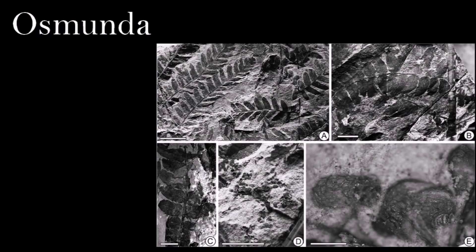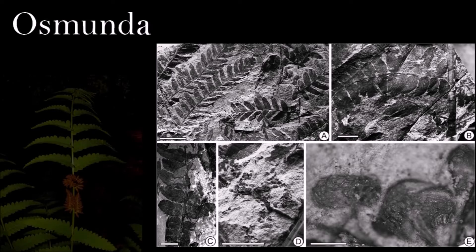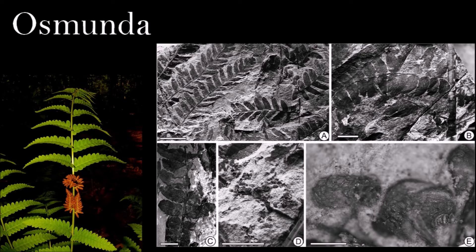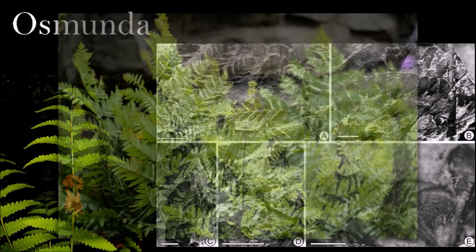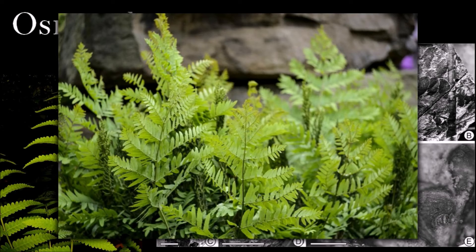The Osmundaceae appeared in the late Permian of both the northern and southern hemispheres. Evolution of the family was rapid during the late Paleozoic and early Mesozoic, giving it the longest fossil record of any of the ferns. There are more than 150 extinct species and a number of living genera including Osmunda.